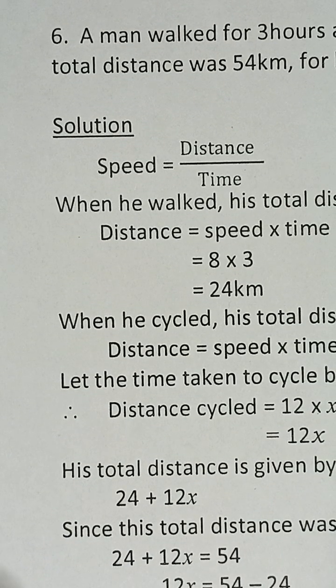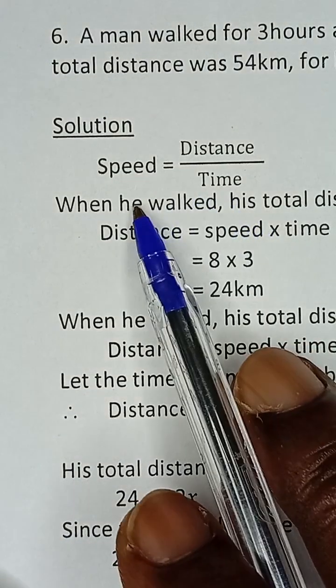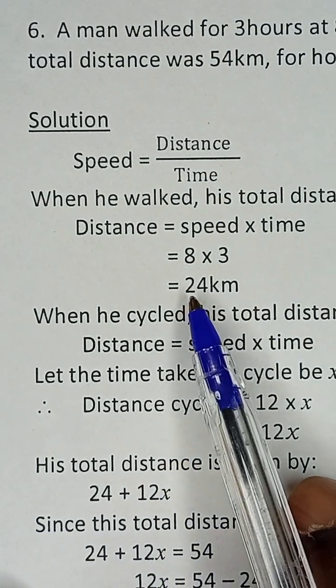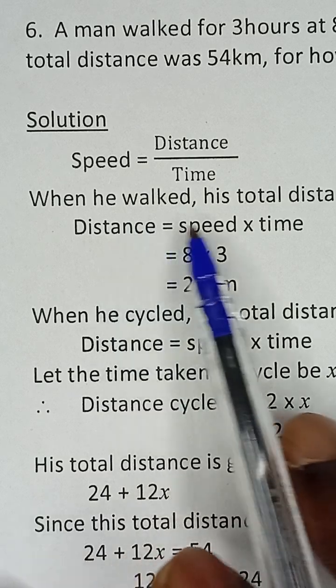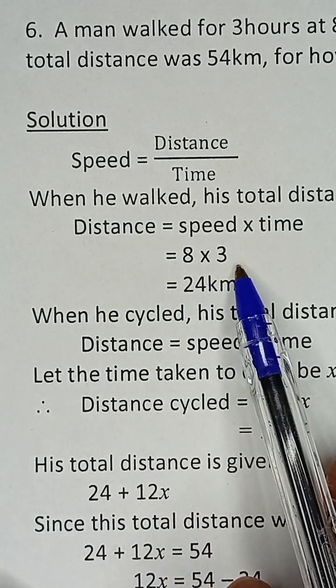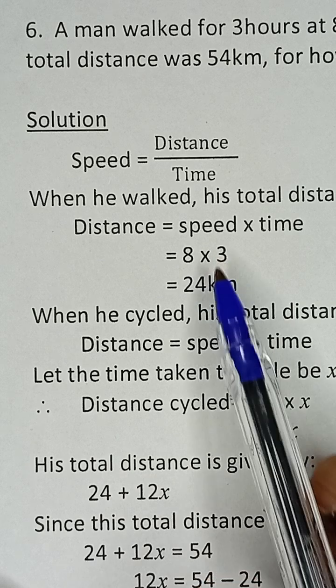The formula is: speed equals distance over time. So the distance he walked was speed times time, which is 8 multiplied by 3, which equals 24 km.